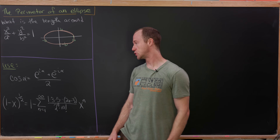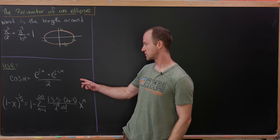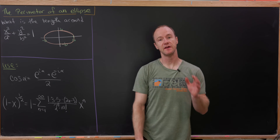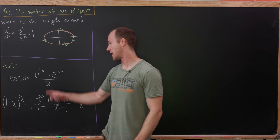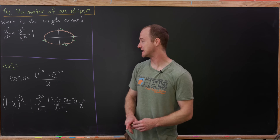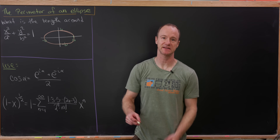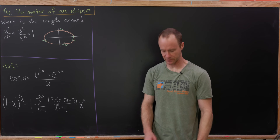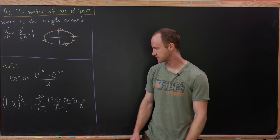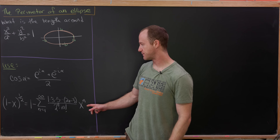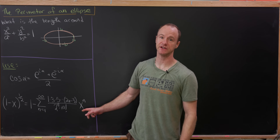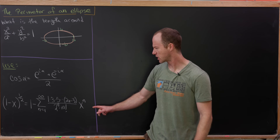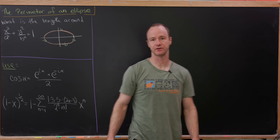We're going to use a couple of tools here. First will be this thing connected to Euler's formula that allows us to write the cosine of α as e to the iα plus e to the minus iα over 2 — in terms of complex exponentials. Furthermore, we'll use the following power series for (1 − x) to the half power, and we're going to derive this really quickly.